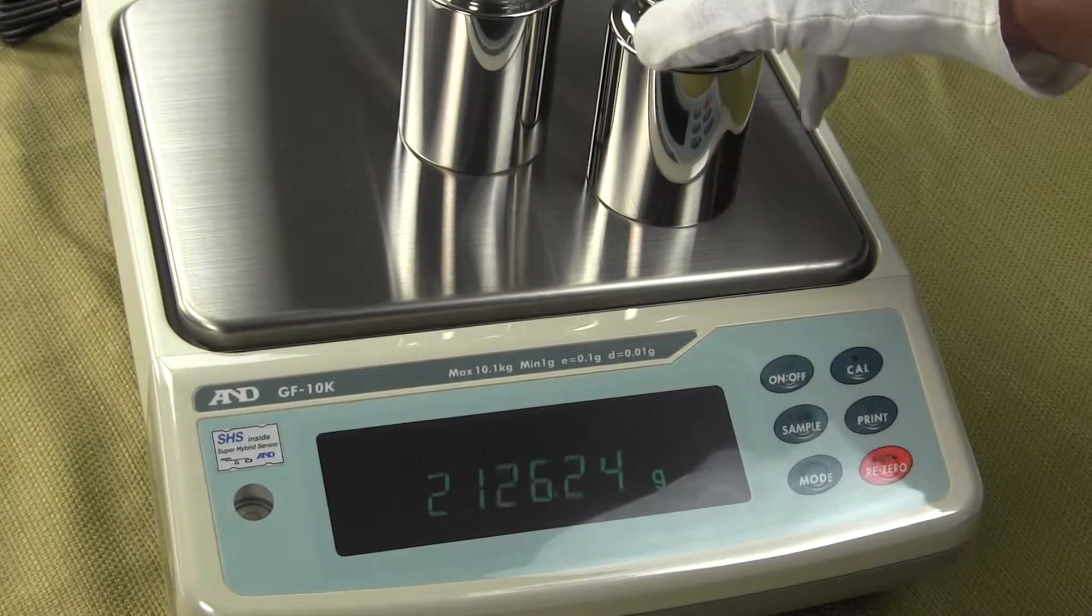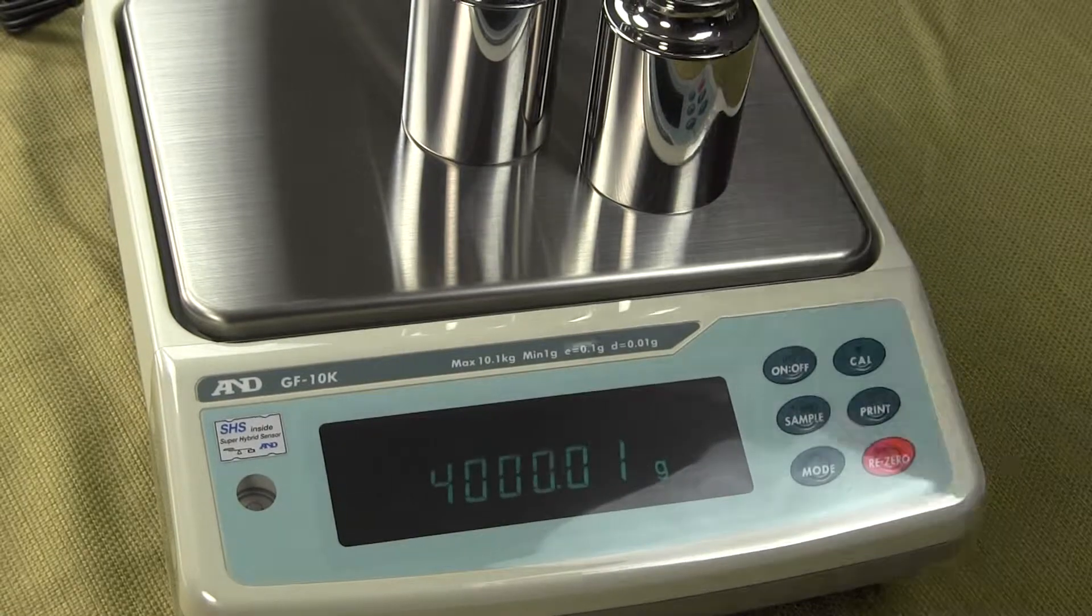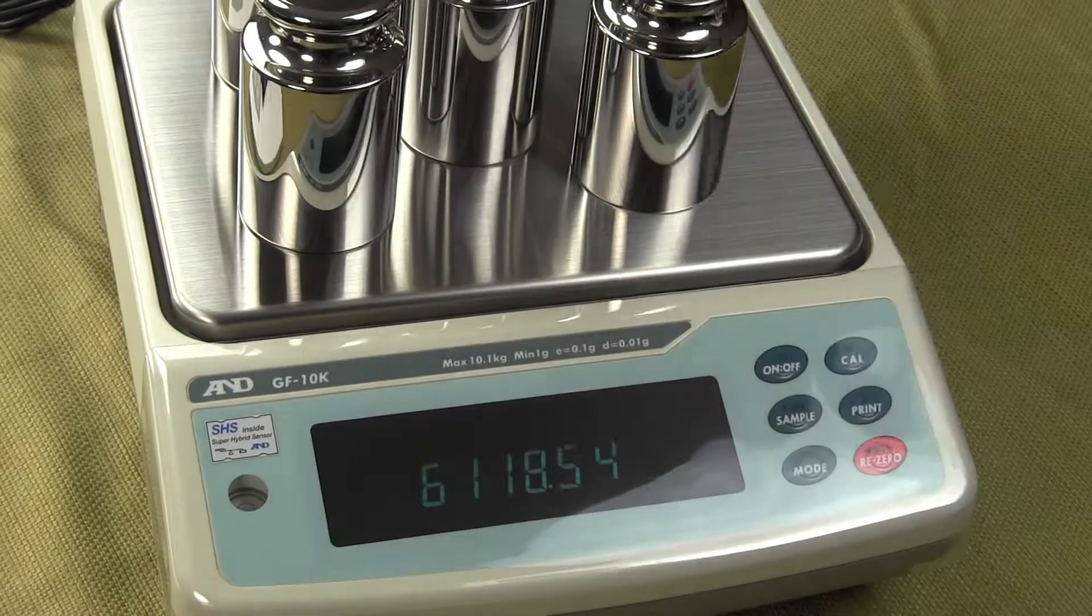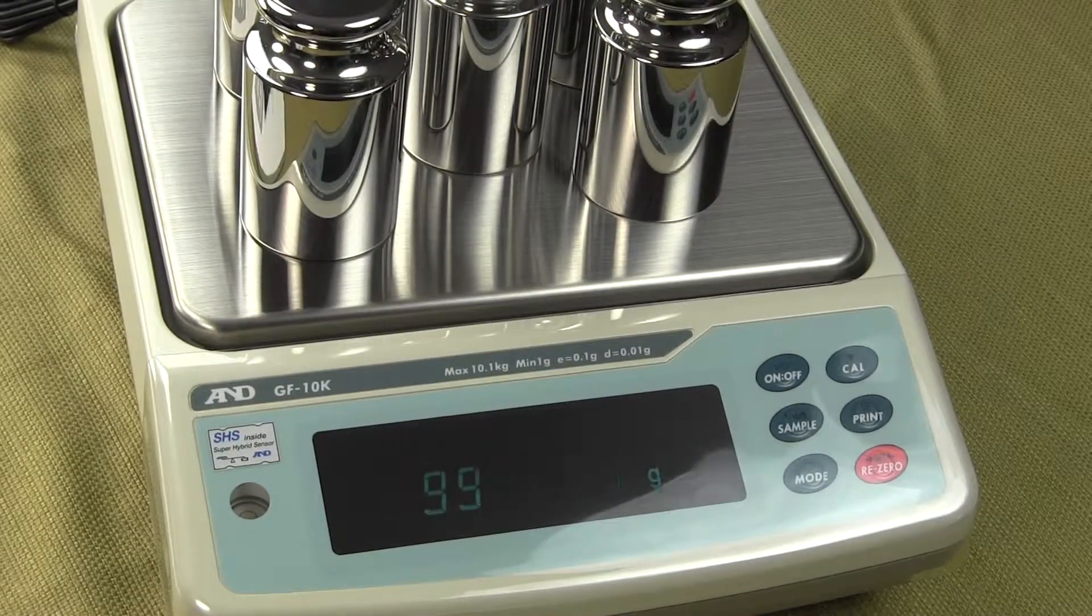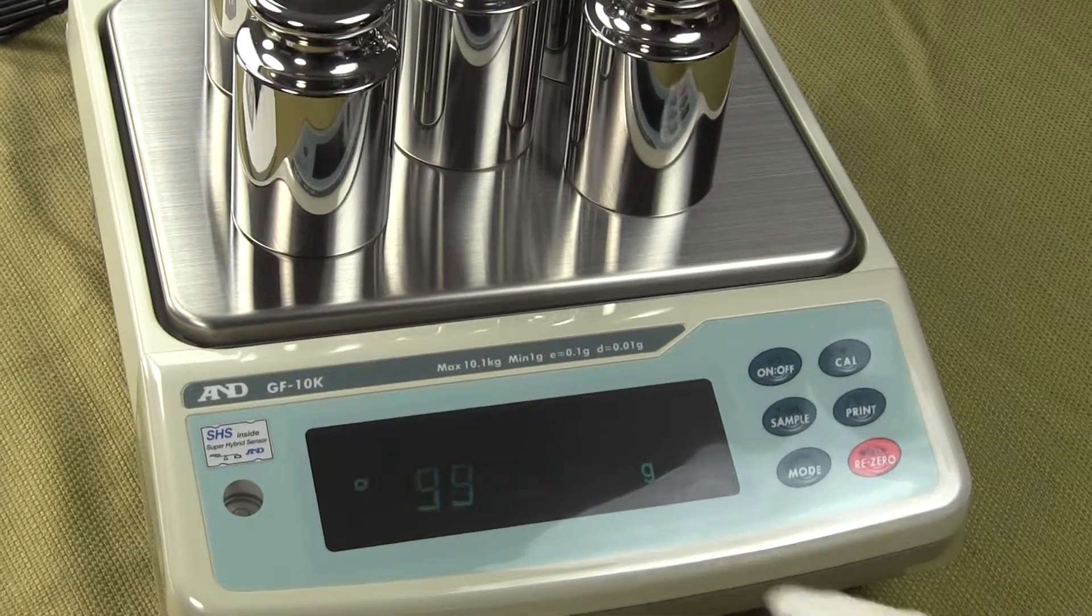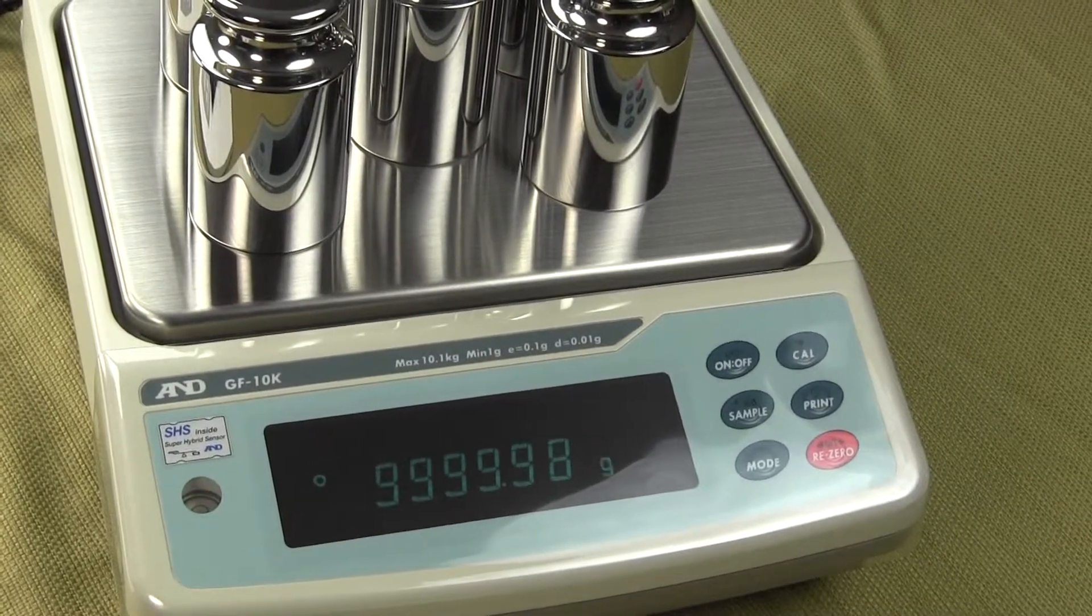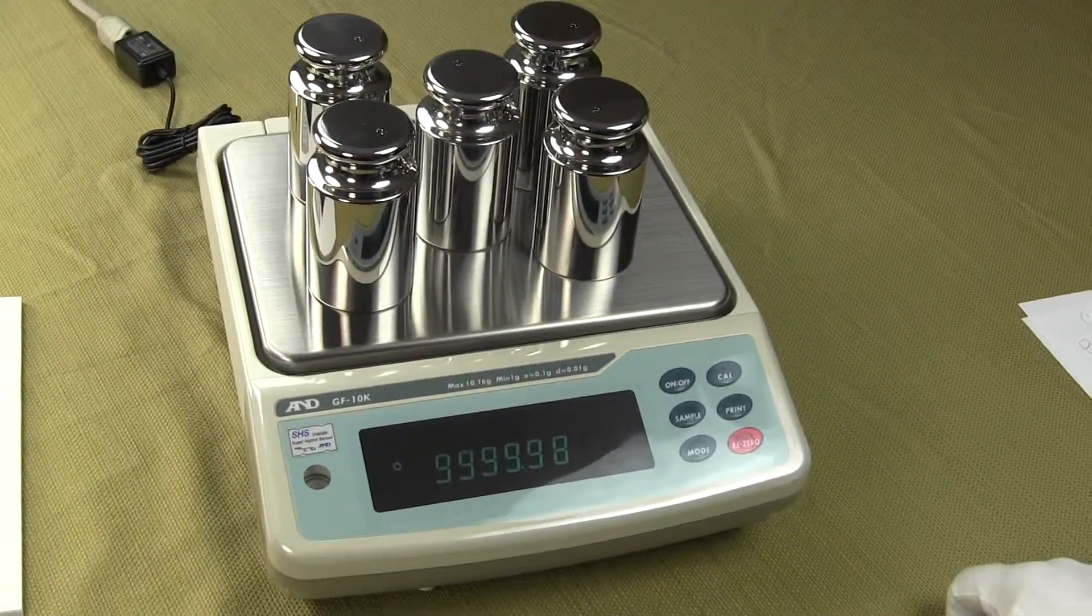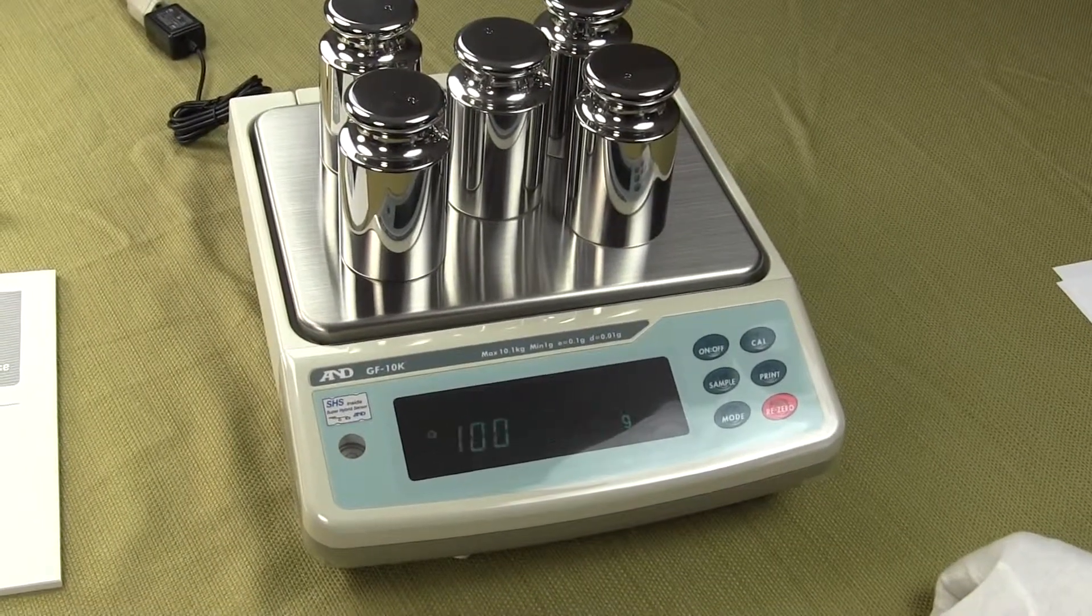You can see the balance. We can run the calibration again, but the balance is right. We're showing 9,999.99. So there it is. It's within tolerance. So this is the A&D GFK. It has external calibration only. There is another model called the GX series. And on the GX series, that has the motorized internal calibration.